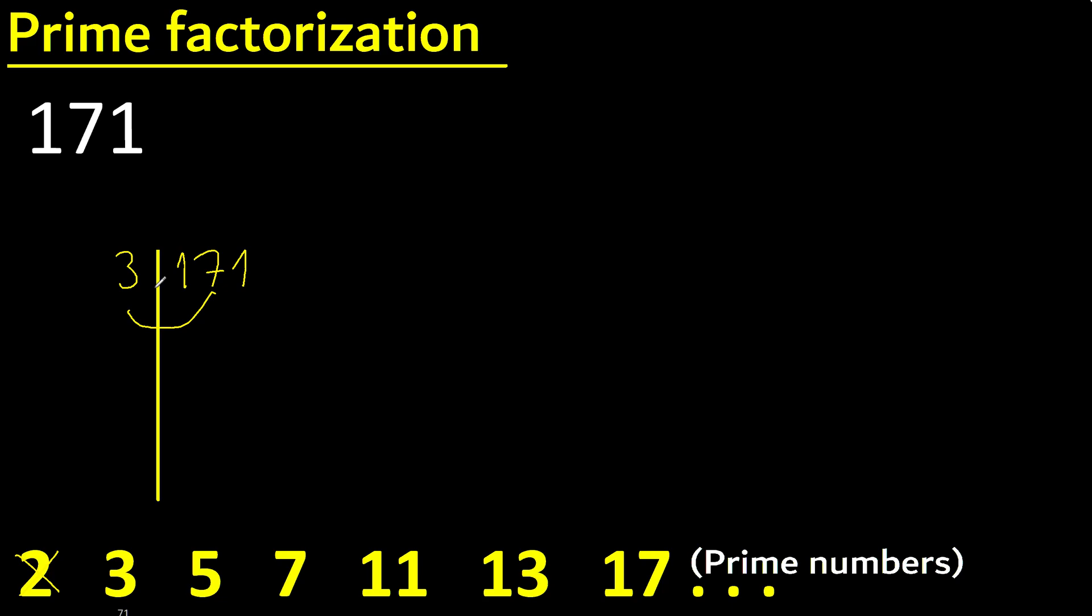171 divided by 3 is 57. 57 divided by 3 is 19.